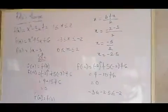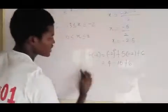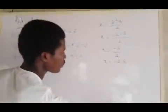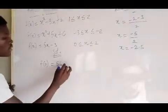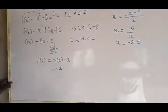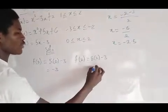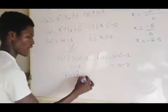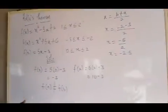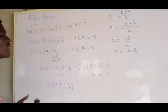For the third example, let's check if f(a) = f(b). f(0) = 5(0) − 3 = −3. f(2) = 5(2) − 3 = 10 − 3 = 7. Since f(a) ≠ f(b), this function does not satisfy Rolle's Theorem, so no point can be found.